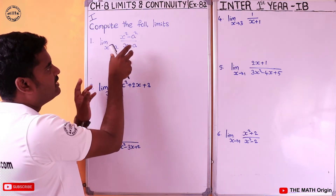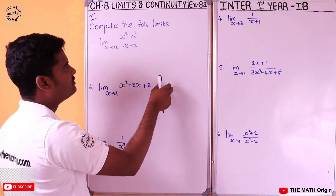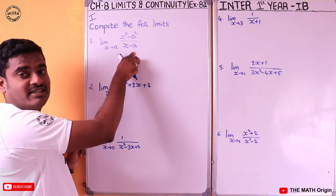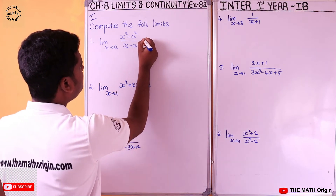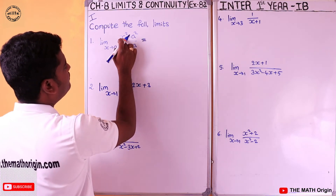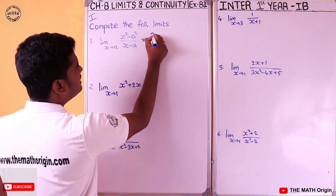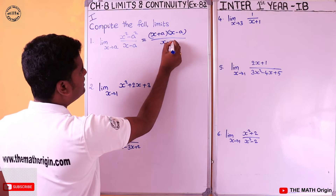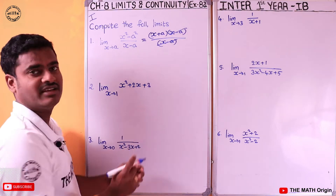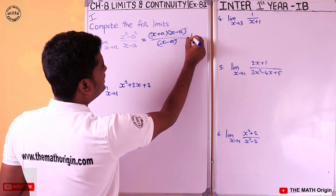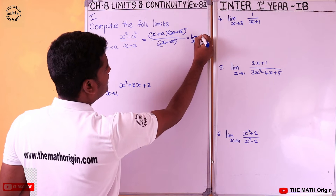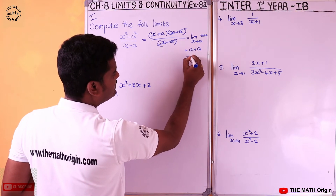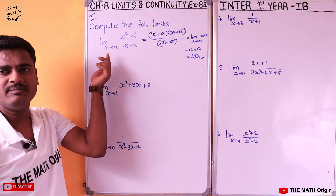Here the denominator becomes 0 when x = a. So we factorize: x² - a² = (x+a)(x-a). The (x - a) terms cancel. The remaining value is x + a, so substituting x = a gives a + a = 2a.